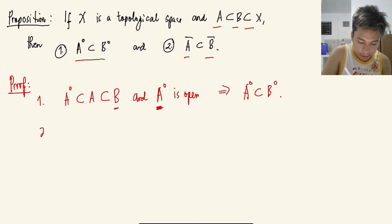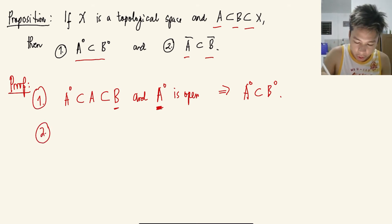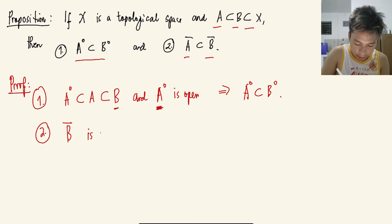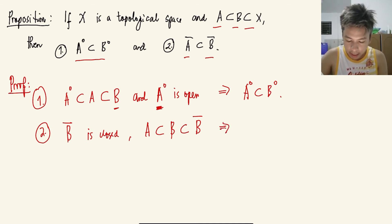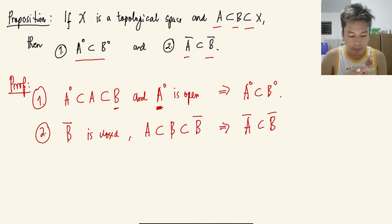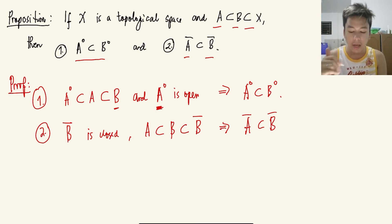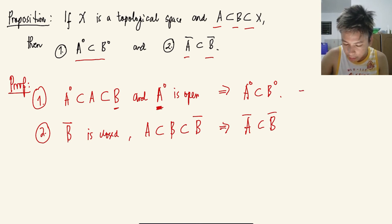For part two of the first proposition: the closure of B is closed. Since A is a subset of B, A is also a subset of the closure of B. Then by note eight, it follows that the closure of A is a subset of the closure of B. So, the proof of part one relies on note seven and part two relies on note eight.